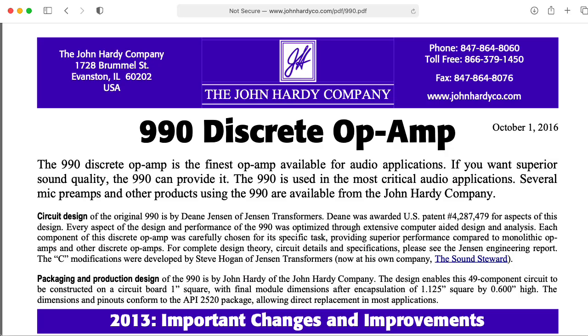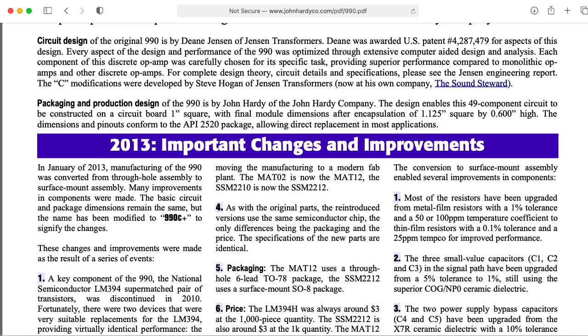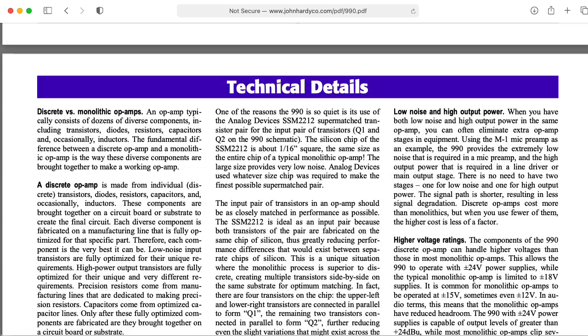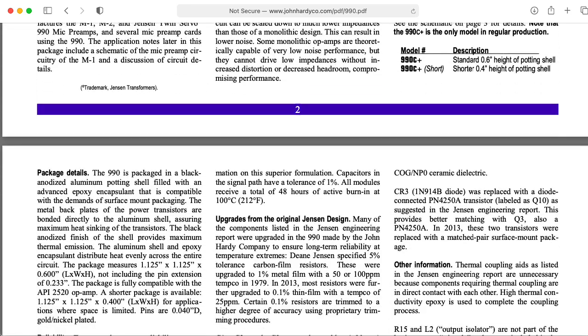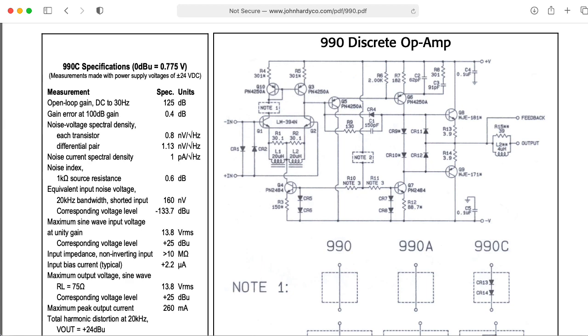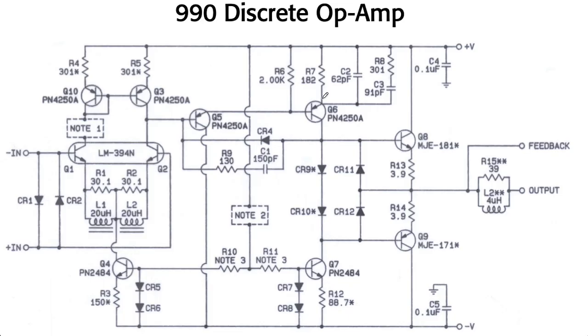This is the data sheet for the 990 discrete op amp that's currently produced by the John Hardy Company. And this is popular in musical applications, particularly microphone preamplifiers. And if we scroll down a little bit, we can find the schematic. As a fun aside, I thought it might be interesting to take a look at this. The main thing I wanted to point out relative to this lecture is that we have a current source down here consisting of a couple of diodes for the biasing. And we have another current source here.